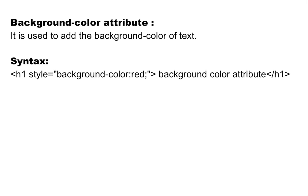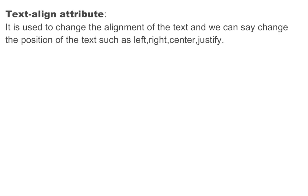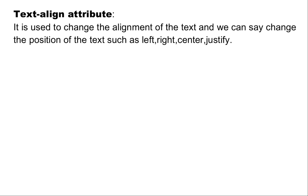Next is the background-color attribute. It is used to add background color to the text. Syntax: open the h1 tag, then style attribute, then background-color as the attribute name. Next is the font-size attribute. It is used to change the size of the text. Syntax: open the h1 tag, then style equals, attribute name is font-size and the value is 250, then some content, and close the h1 tag.